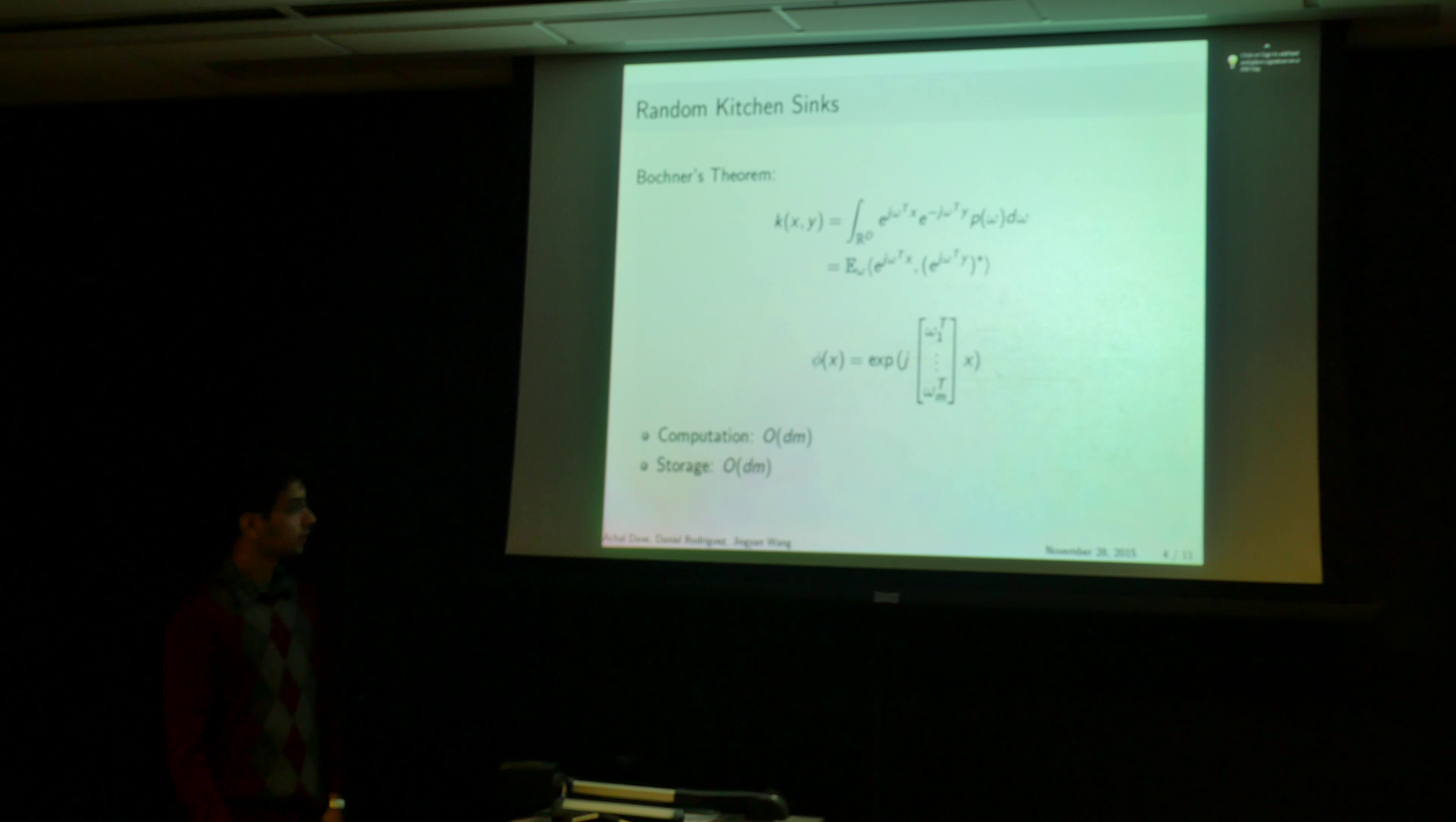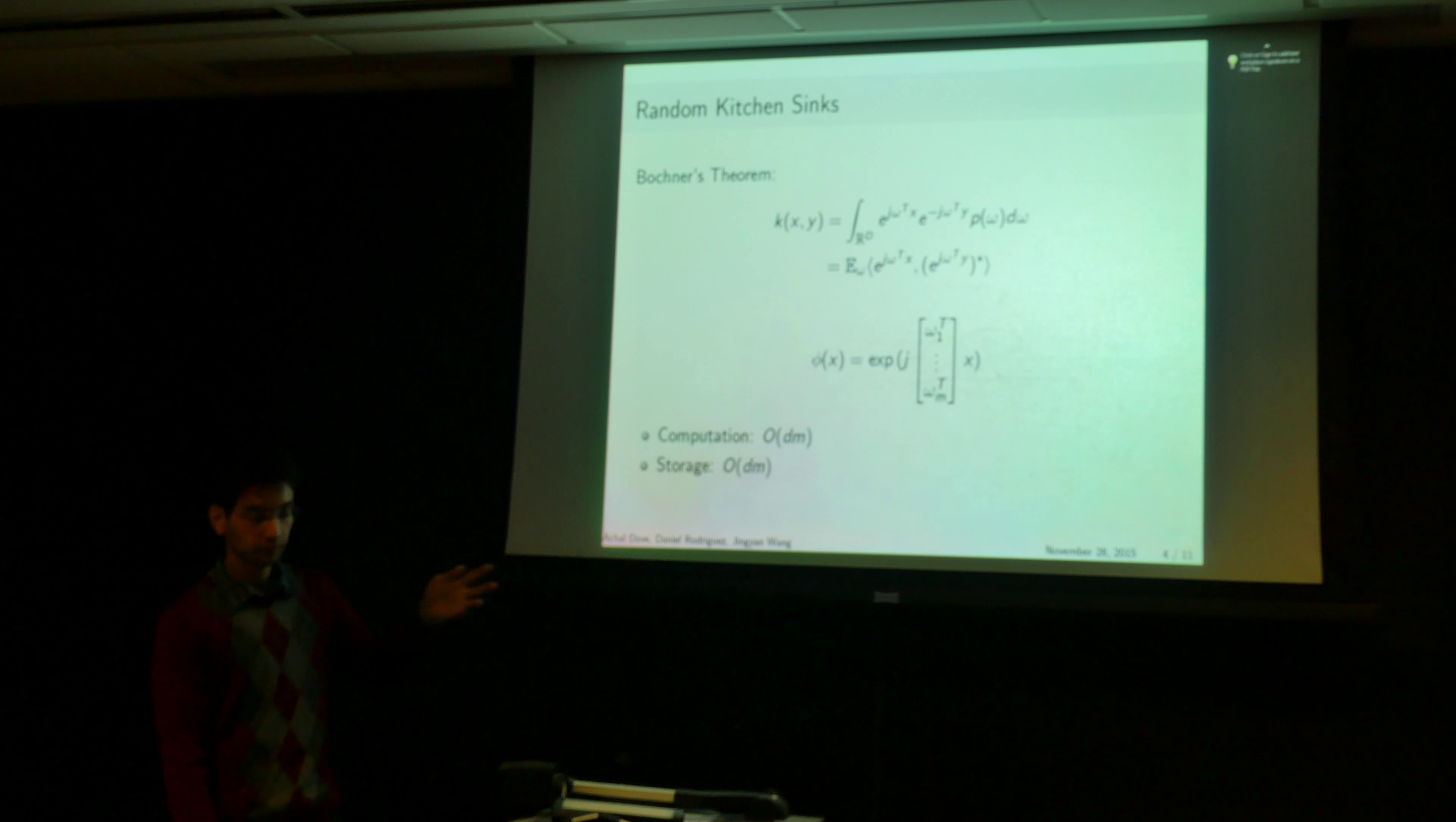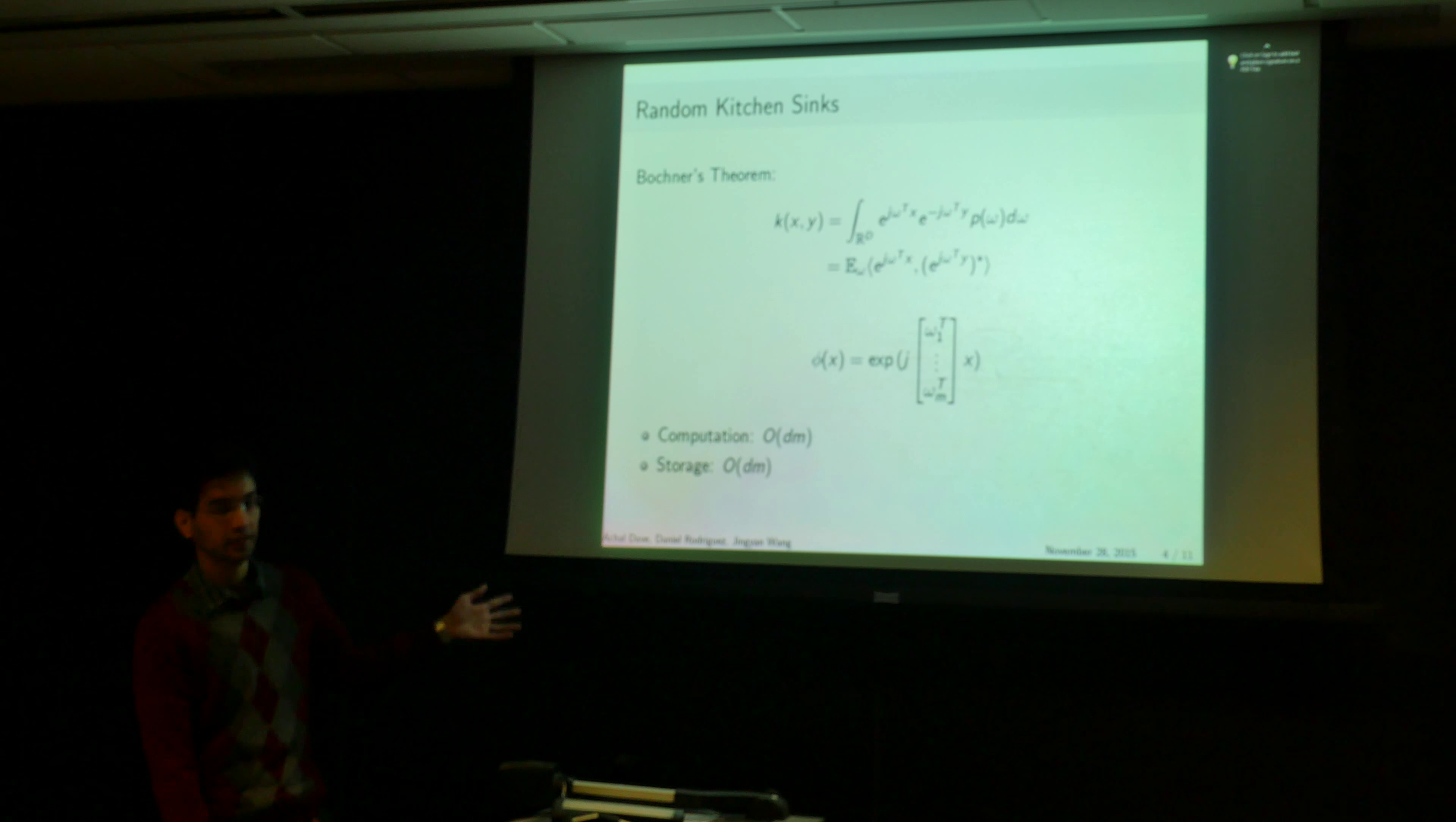So the key thing that fast food tries to solve is this dependence on d, because when you have very high dimensional data like images, that's very expensive.